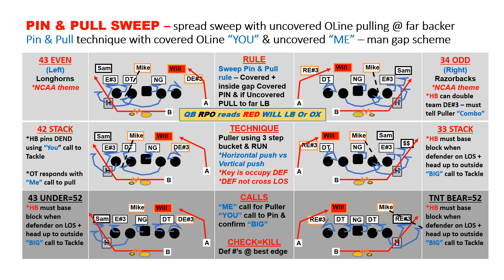Family number two is outside gap, which consists of a pin and pull sweep. We'll use you-me calls on our gap scheme. The rule is simple: if you are covered or your inside gap is covered, you're going to pin — that would be a you-call. If you're uncovered, then you're the puller to the far linebacker, using a me-call. We use an NCAA theme with Longhorns to the left and Razorbacks to the right. Against a TNT bear, everyone is covered, so we convert to our Aussie call and go to stretch.